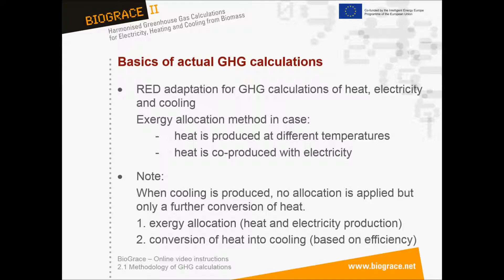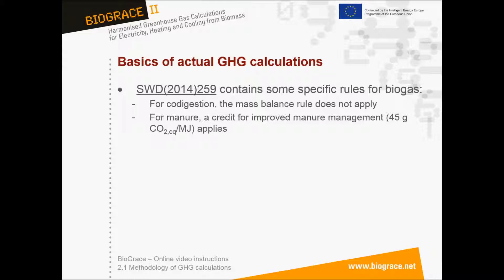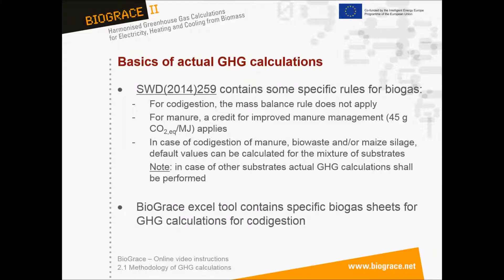The Staff Working Document methodology contains some specific rules for biogas. For co-digestion, the mass balance rule does not apply. For manure, a credit for improved manure management applies. In case of co-digestion of manure, bio-waste and/or maize silage, default values can be calculated for the mixture of substrates. Note that if substrates other than maize, manure and bio-waste are co-digested, an actual calculation of emissions per megajoule biogas shall be performed. Based on these methodological aspects, two specific biogas sheets have been included in the Biograze 2 Excel tool to help stakeholders making greenhouse gas calculations for co-digestion.